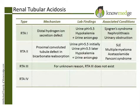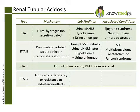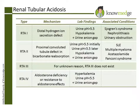RTA type 4 is caused by hypoaldosteronism or a resistance to aldosterone's effects. It is the only one of the RTAs that has hyperkalemia. Other lab findings include a urine pH less than 5.5 and a positive urine anion gap. Medications which can cause hypoaldosteronism include eplerinone, spironolactone, and trimethoprim.